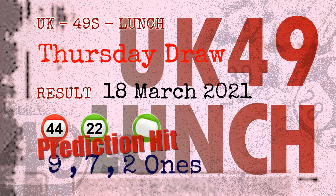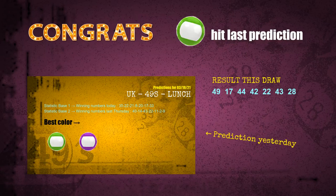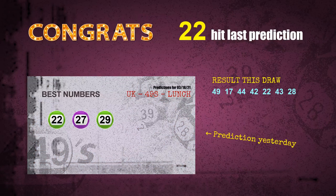Congratulations to friends who bet on 9 ones, 7 ones, 2 ones, number 44, number 22, and green balls. Congrats for all winners. We will tell you how to find out winning numbers of the next draw step by step.